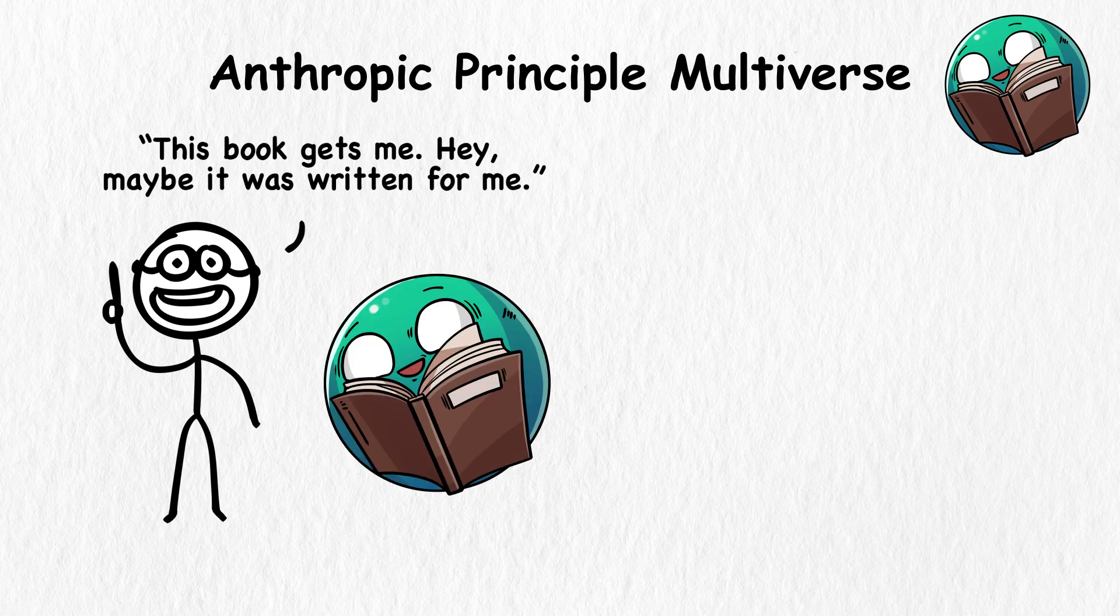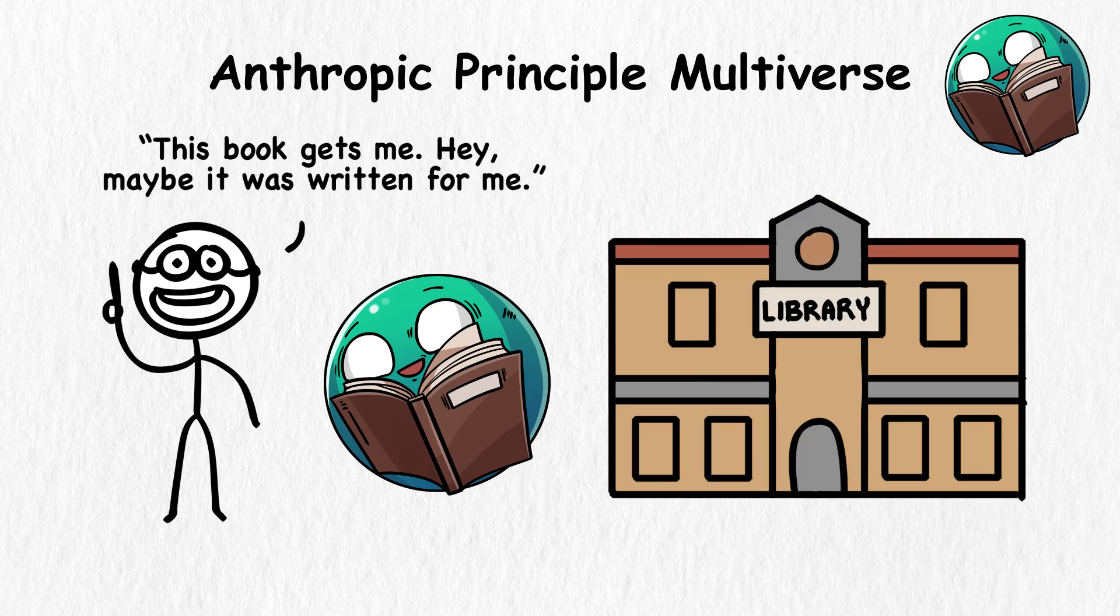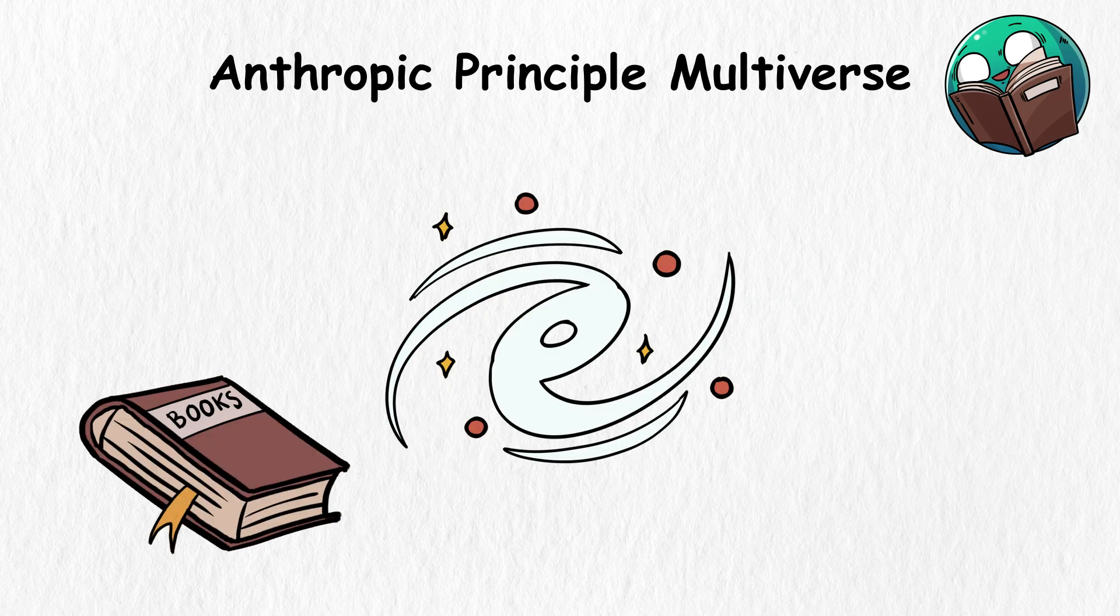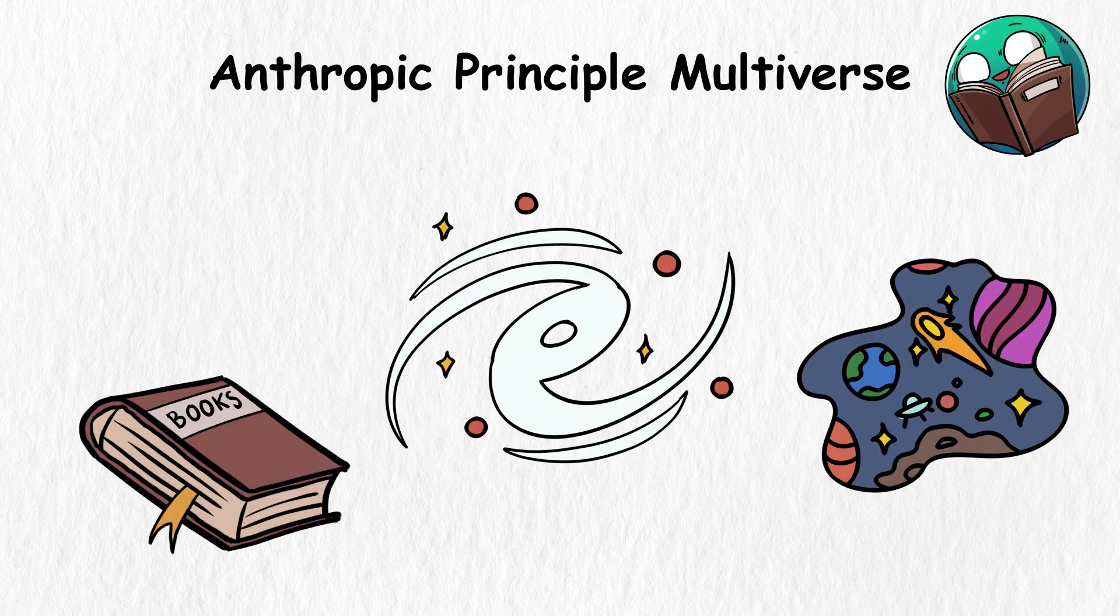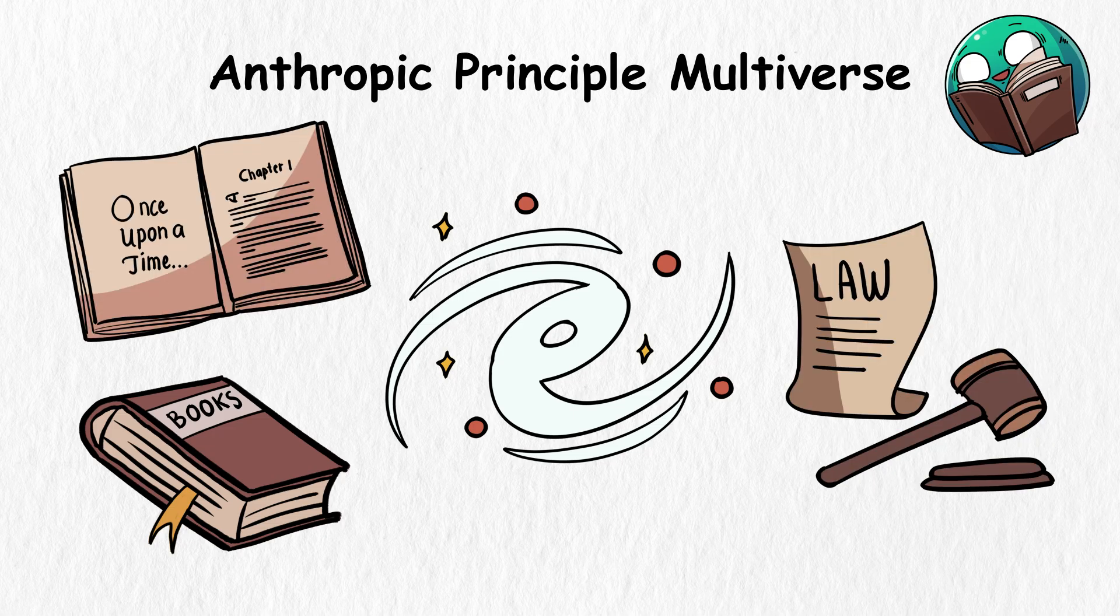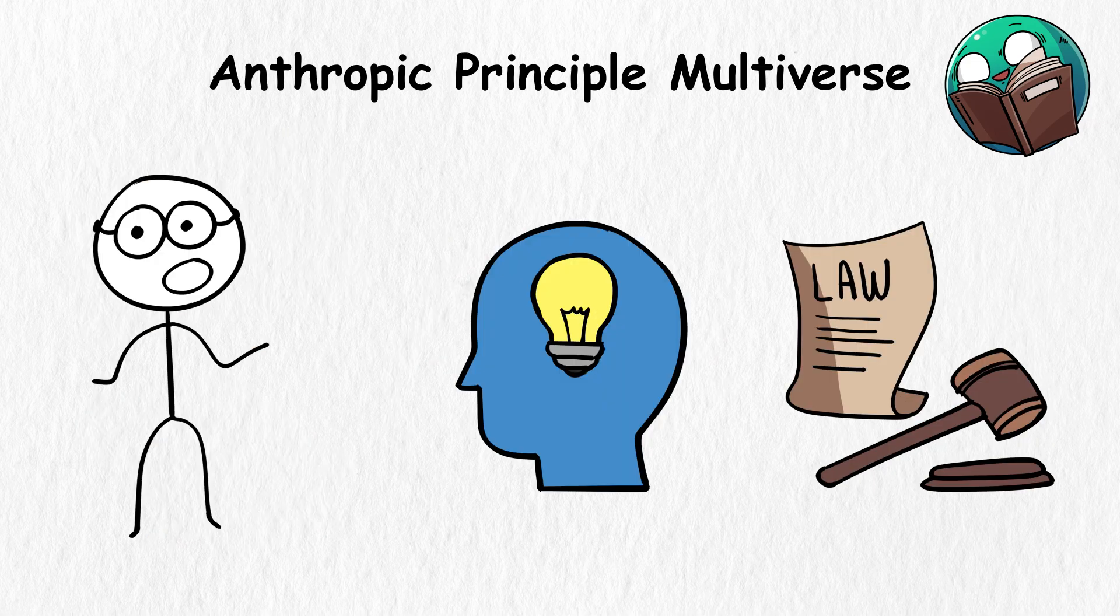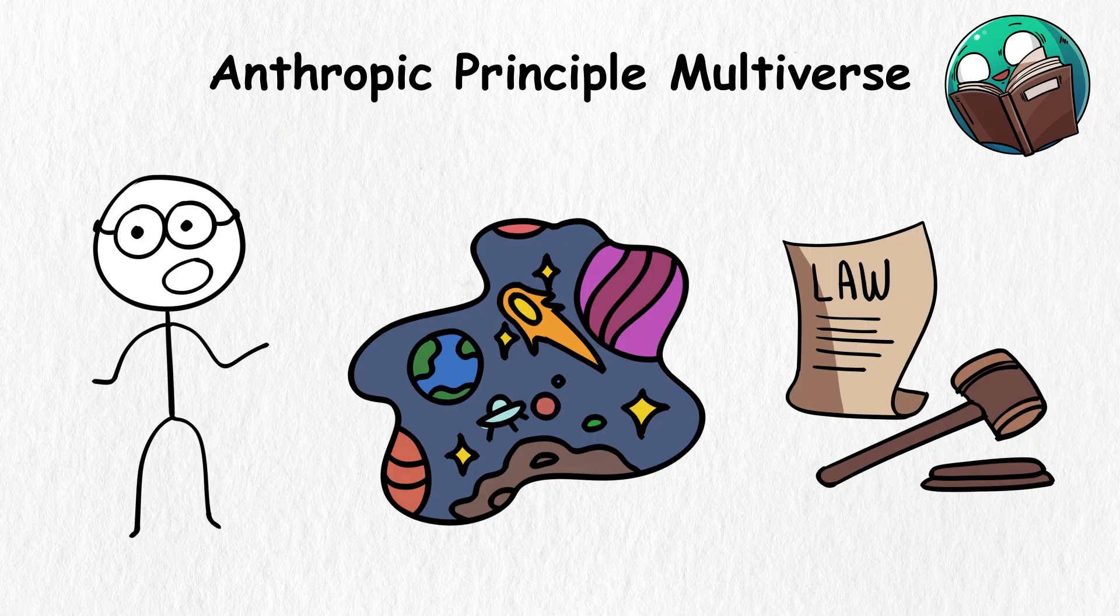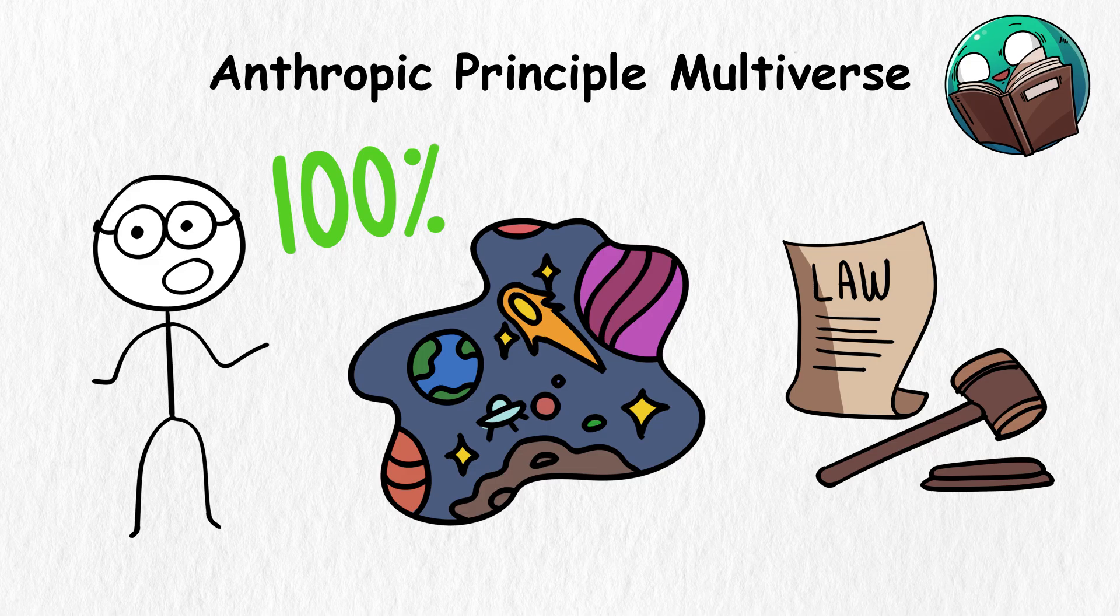Now consider the Anthropic Principle Multiverse theory. It suggests our universe is just one big library in the larger cosmos. Each book in that library represents a universe with different stories and rules. According to this theory, we exist in the universe we live in now because it has perfect conditions for us.